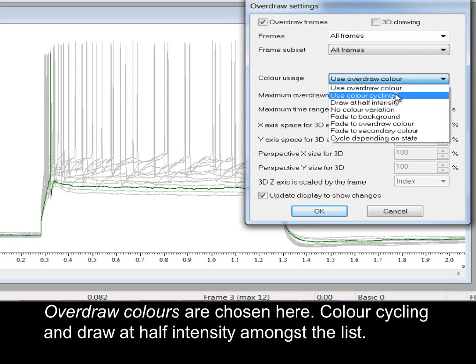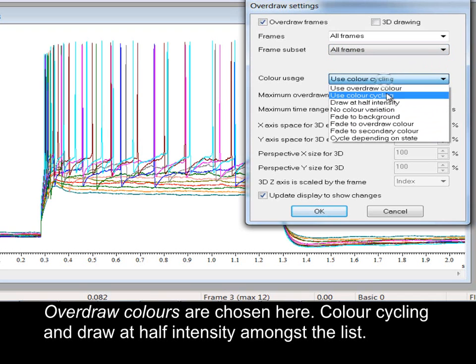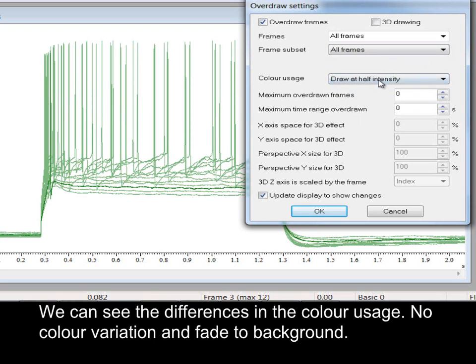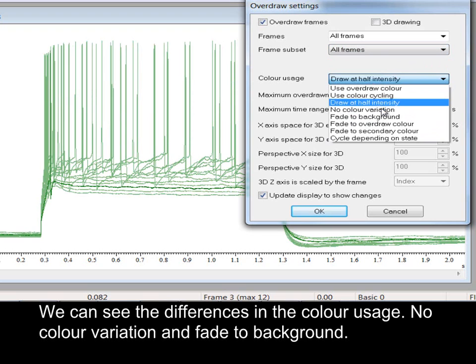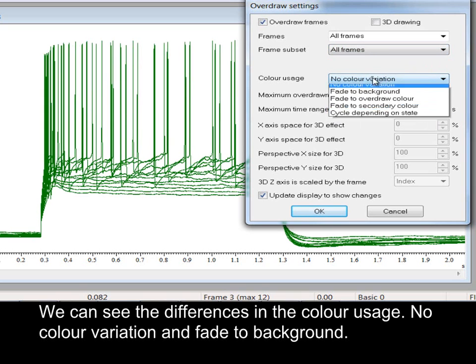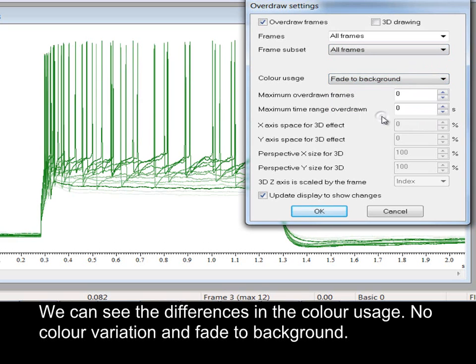Overdraw colors are chosen here. Color cycling and draw at half intensity amongst the list. We can see the differences in the color usage. No color variation, and fade to background.